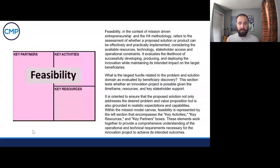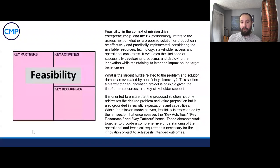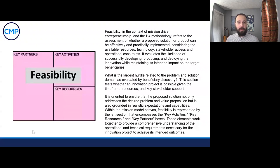What these boxes — this section of the mission model canvas — is really getting to is: do you have the resources that you're actually going to need to deploy a solution? Is it feasible? Whether it's human capital, physical assets, intellectual capacity, capital — whatever it may look like — is it there? Do you have the right people in place from a key partner perspective to actually see this through? One of the best first names you can have here is your sponsor and the sponsoring organization. As a reminder, we're looking at the three boxes on the left-hand side of the canvas — the only area for feasibility in the mission model canvas — and those are your key partners, your key activities, and your resources.